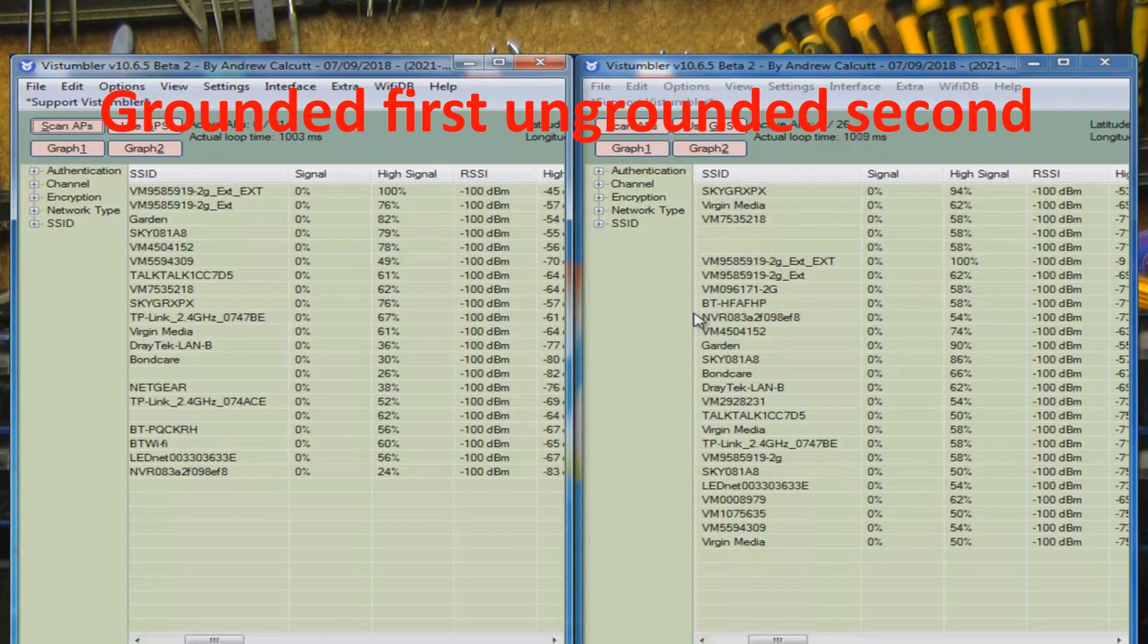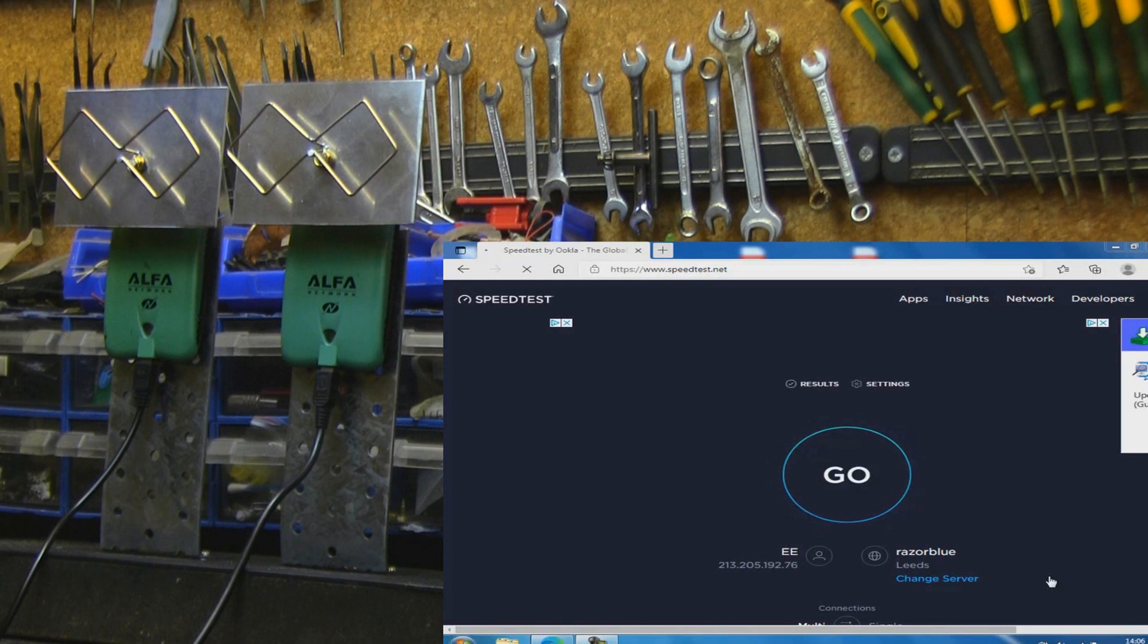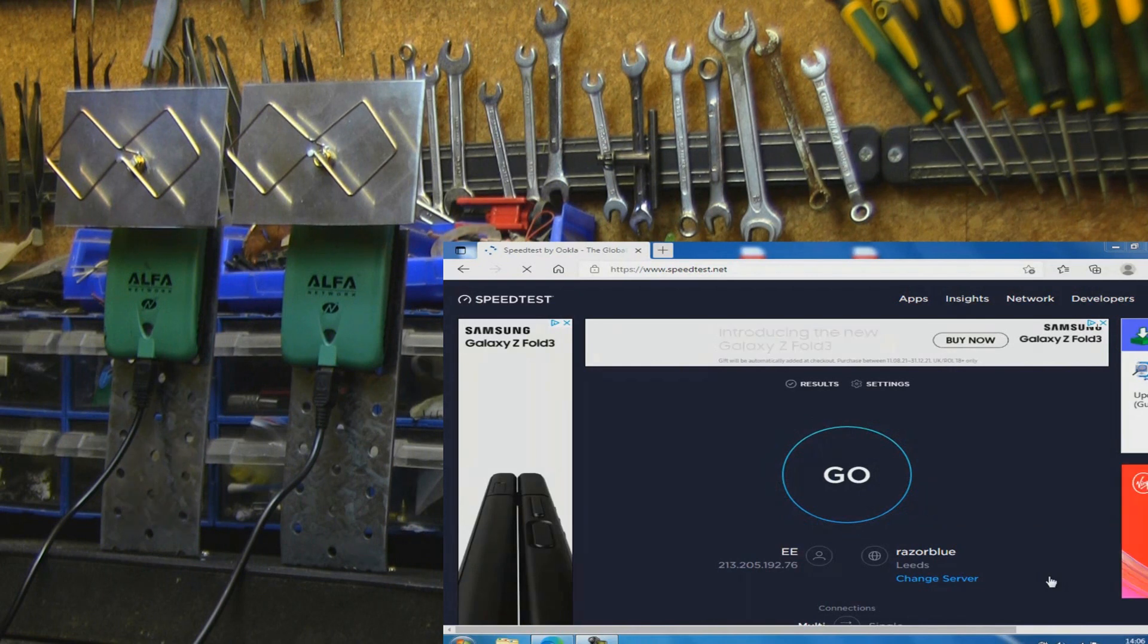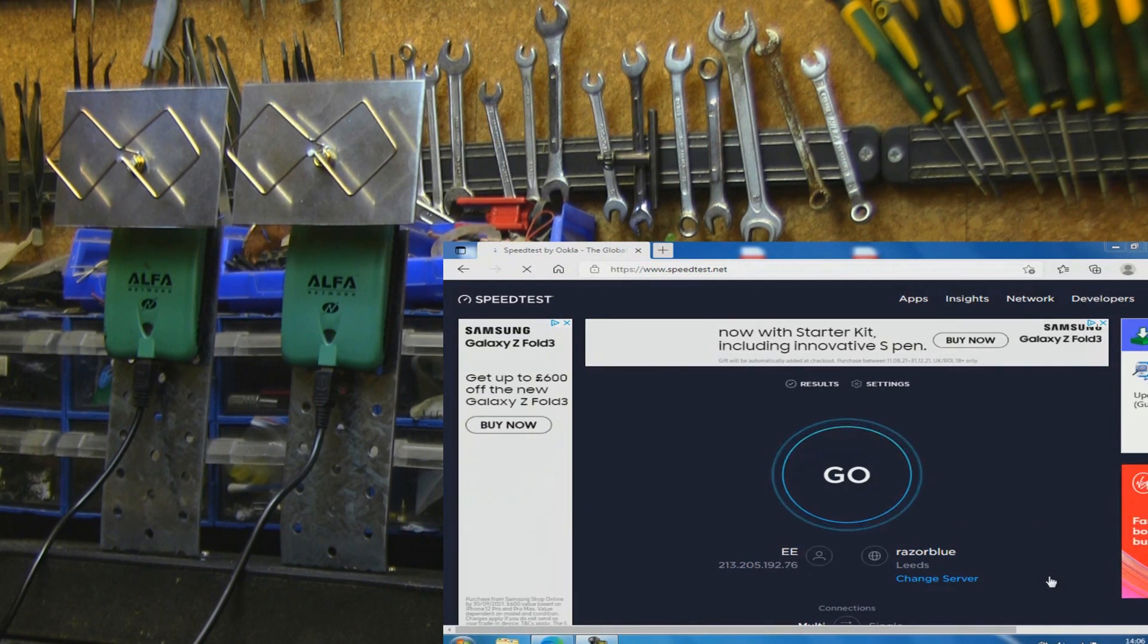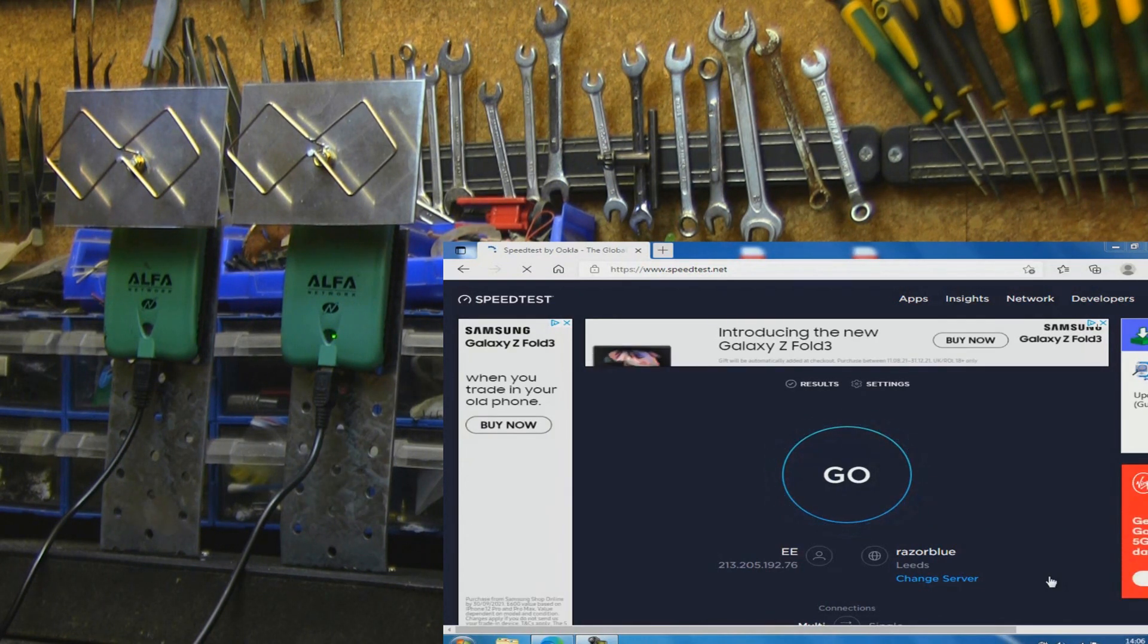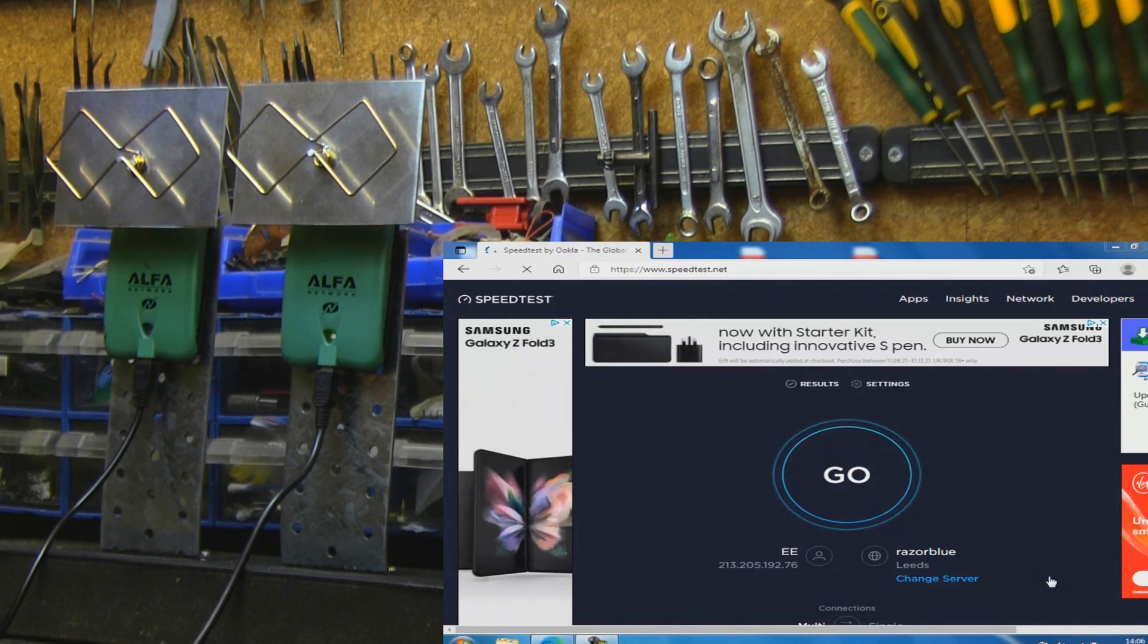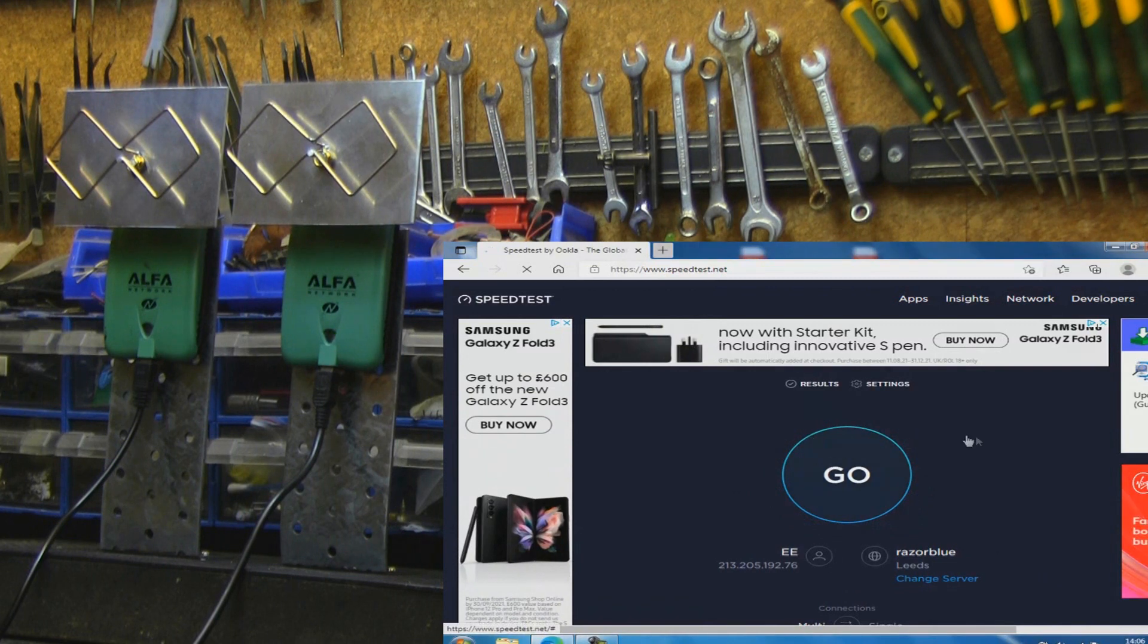So this is the first speed test then. I've got the router, the test router, in my back garden. There's actually my garden wall and the wall here in the lab that's separating them, so they're not line of sight by any means. But we're going to test the grounded one first, so let's give this a go.